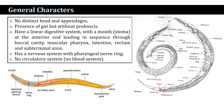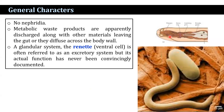The anus is sub-terminal in position. They have a nervous system with a pharyngeal nerve ring. There is no circulatory system — they have no blood system — and no nephridia. The metabolic waste products are apparently discharged along with other materials leaving the gut, or they diffuse across the body wall.